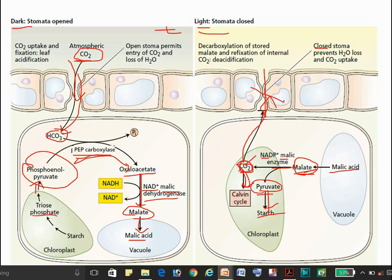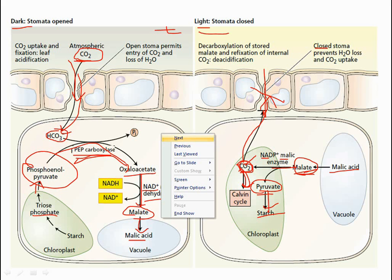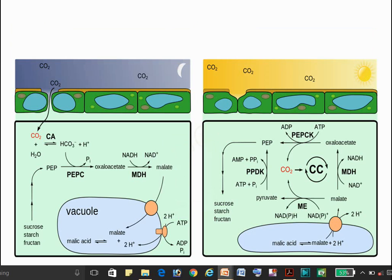Starch is further used in the day condition for the reformation of PEP, so the reactions continue. This is a combination of night and day mechanisms, and some reactions are similar to the C4 pathway. The diagram shown here more precisely explains the reactions taking place in the night condition and day condition — the entry of CO2 combined with H2O, and carbonic anhydrase converting it into HCO3⁻.